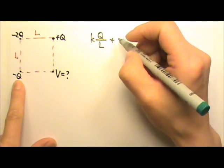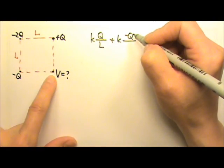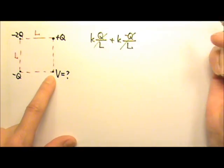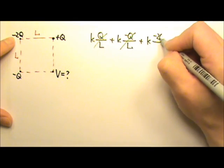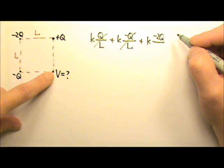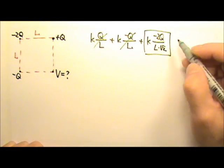The potential produced by that one would be K negative Q over R, which is L. So these two, they cancel. And then this one is K negative 2Q, and the R would be L times square root of 2. So this is the answer.